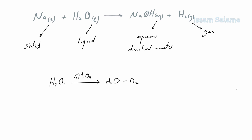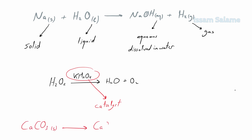Sometimes in a chemical formula equation we can see a substance written above the arrow, like potassium permanganate. This indicates it is a catalyst, which is a substance that speeds up a chemical reaction without interfering in that reaction. You may also see a delta symbol above the arrow, which means the reactants are heated for the reaction to proceed.